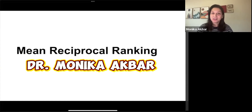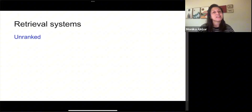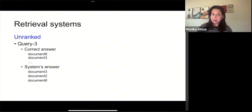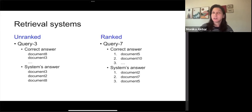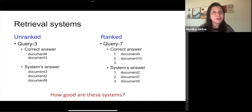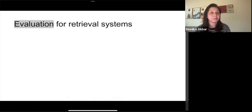Today we are going to see an evaluation metric for information retrieval called mean reciprocal ranking. A retrieval system will return a set of documents in response to a query or question. This returned document can be unranked or ranked. How do we know how the system is doing in terms of responding to a query? Evaluation of retrieval systems are different for ranked or unranked systems.